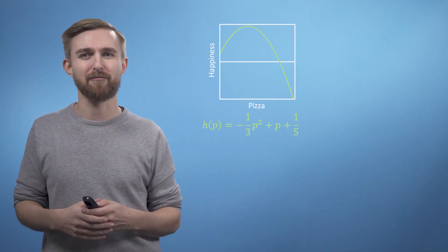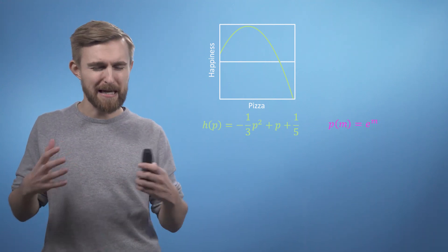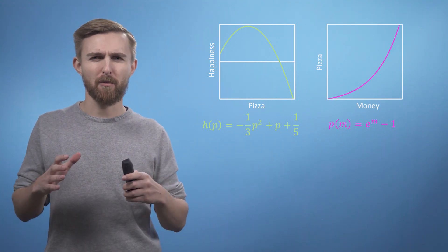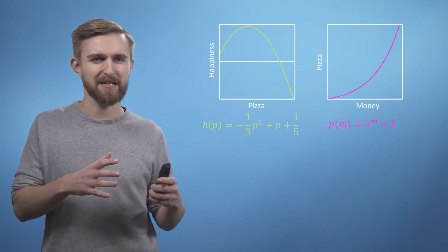Next is our function relating pizza and money. p of m equals e to the power of m minus one, which is also fairly straightforward to understand by looking at a plot.